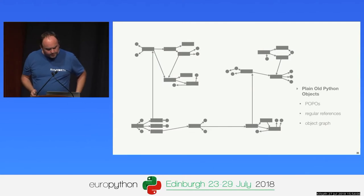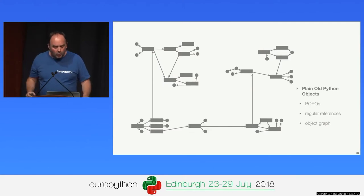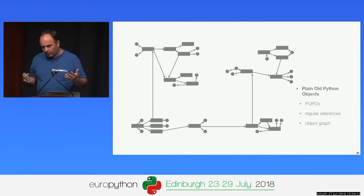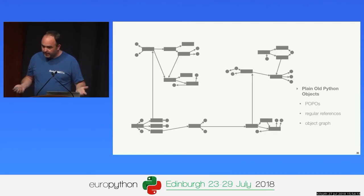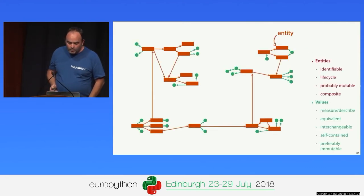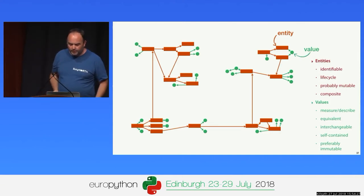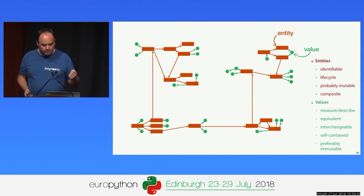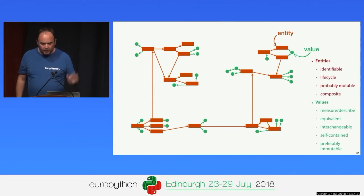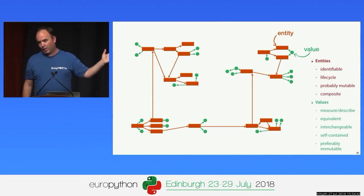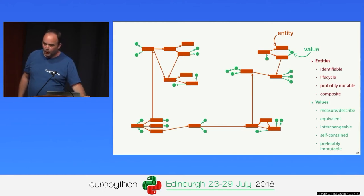At the most basic level, domain models are constructed from graphs of entities — shown in rectangles — which own value objects. Immutable value objects may be shared. Entities are identifiable, have a lifecycle, are probably mutable, and are composite. Value objects measure and describe quantities — they're equivalent, interchangeable, self-contained, and preferably immutable. Almost any Python system, whether built using DDD or not, will involve a domain model something like this.